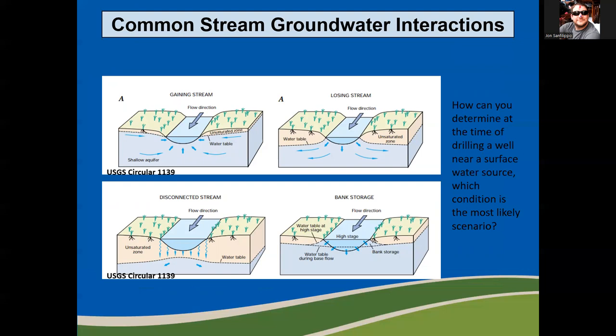Common stream-groundwater interactions. On the top left corner, we have a gaining stream, which means the shallow unconfined aquifer is feeding or discharging water into the stream and maintaining a base flow. On the top right corner, we have a losing stream, where the stream is recharging the shallow unconfined aquifer. On the bottom left, we have a disconnected stream where there is no saturated zone between the shallow unconfined aquifer and the stream — they are not directly connected.